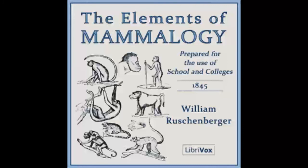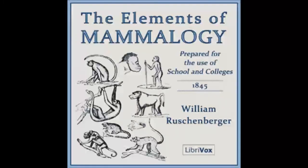Those genera which resemble each other most are united into tribes, and the tribes into families. The families are distributed on the same principle into groups of a higher rank, to which the name of order is applied. Finally, the orders are in turn united into classes, and the classes themselves are the divisions of the great branches of which the animal kingdom is composed.